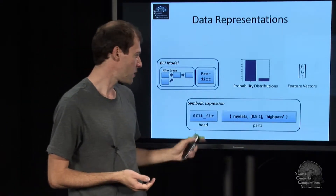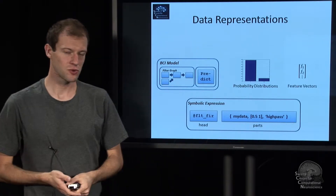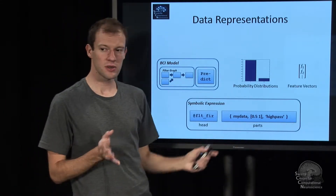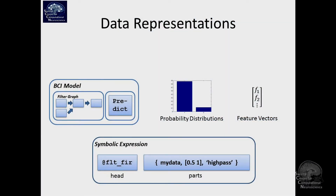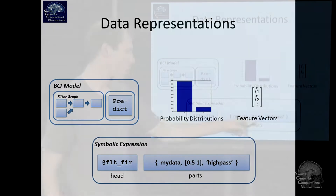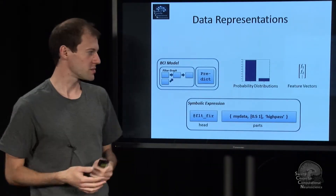Feature vectors are an obvious one. And then there are these so-called symbolic expressions. You'll probably see them occasionally, but usually you don't have to work with them. They are really just a representation of what to compute — for example, one might say 'run FLT FIR with these arguments.' It's basically equivalent to a string, except broken down into parts that are easily transformed by algorithms.